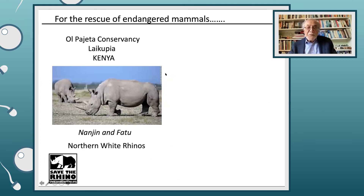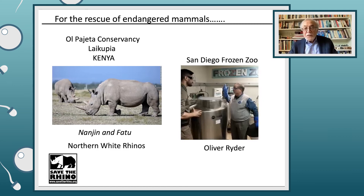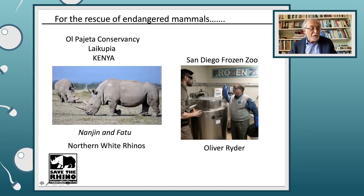The aspect of rescue of endangered mammals: here's an example of the northern white rhino. There are only two left now in Ol Pejeta, in Kenya. There are indeed efforts being made to see if it's possible to make gametes from skin cells that have been frozen in the San Diego Frozen Zoo by Oliver Ryder and his colleagues. So there are efforts being made to make what we call synthetic gametes, to see if they might be used for the rescue of endangered mammals. I think if this works, it will be a very good outcome of all these research efforts.